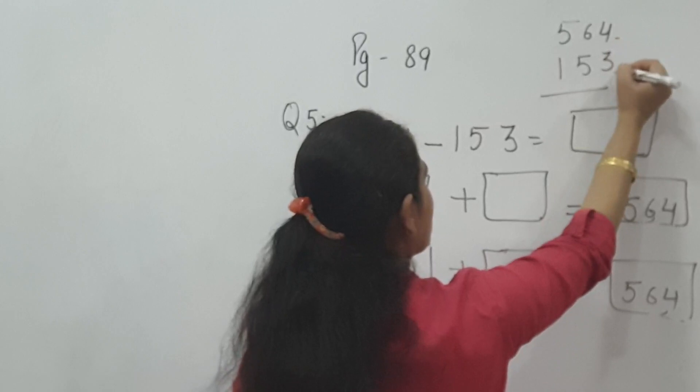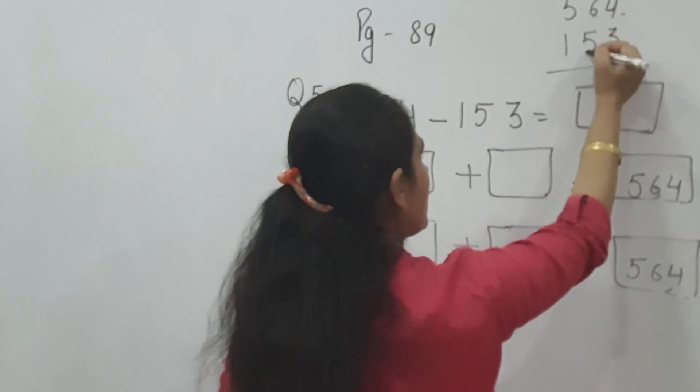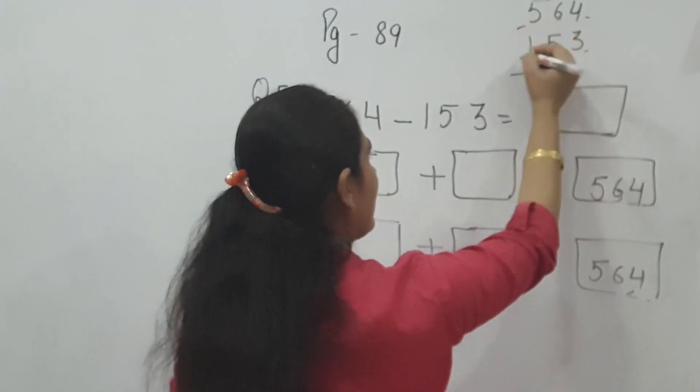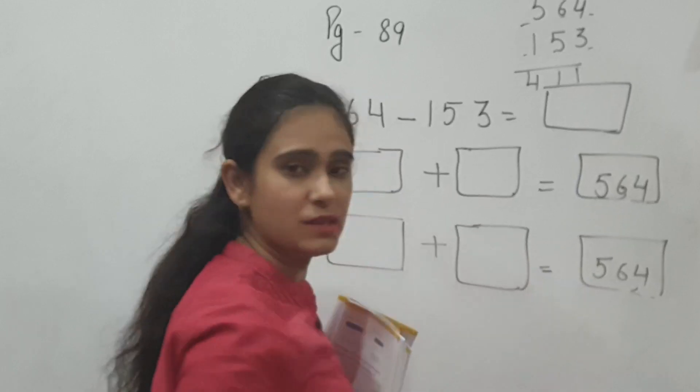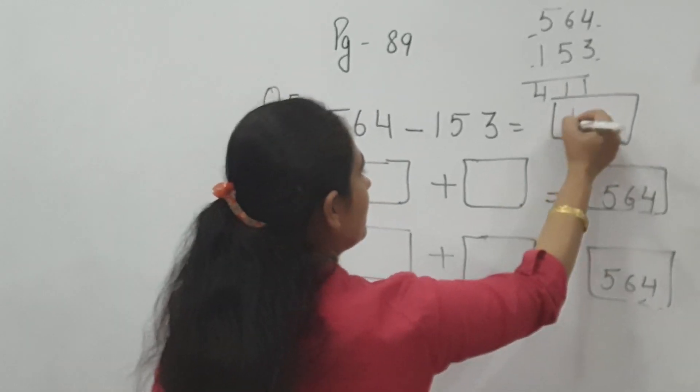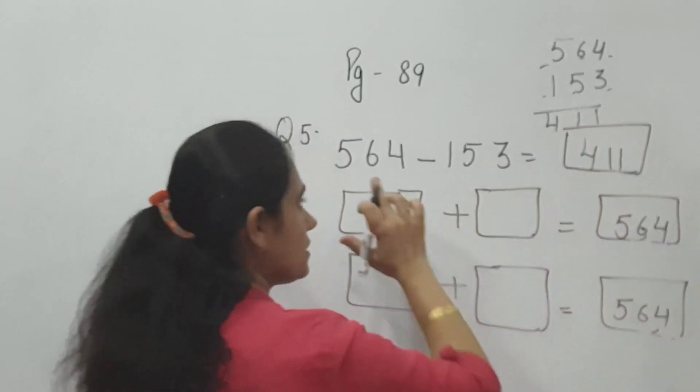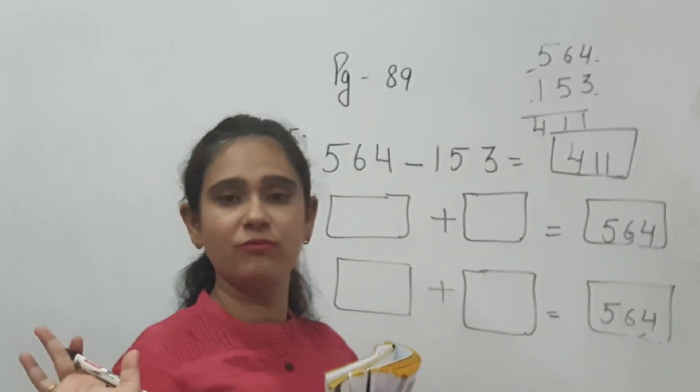4 minus 3 is 1. 6 minus 5 is 1. 5 minus 1 is 4. The answer will be 411. Yes, this statement we have got.